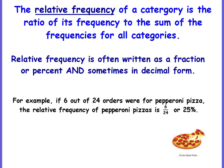The relative frequency of a category is the ratio of its frequency to the sum of the frequencies for all categories. With ratios we can write it using a colon or the word 'to,' but in this case we want to write it in fraction form. Relative frequency is often written as a fraction or percent and sometimes also in decimal form.